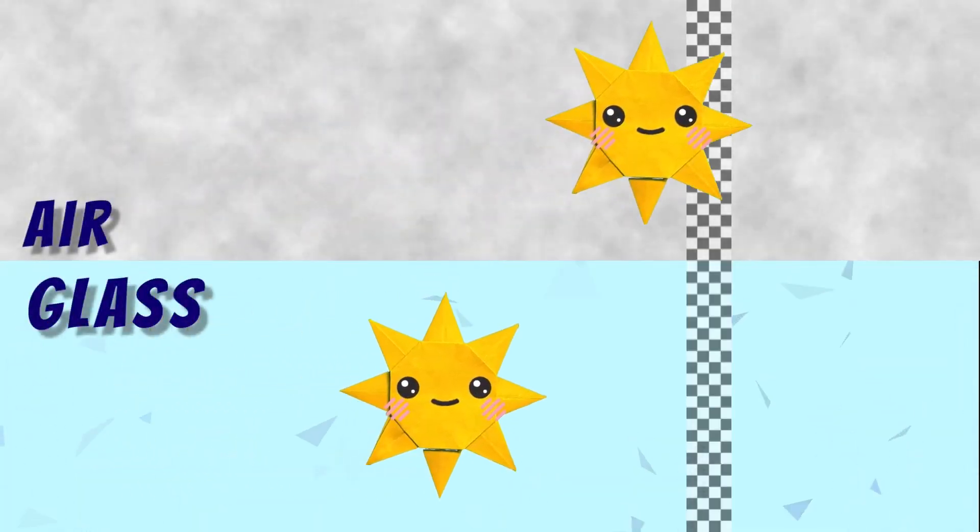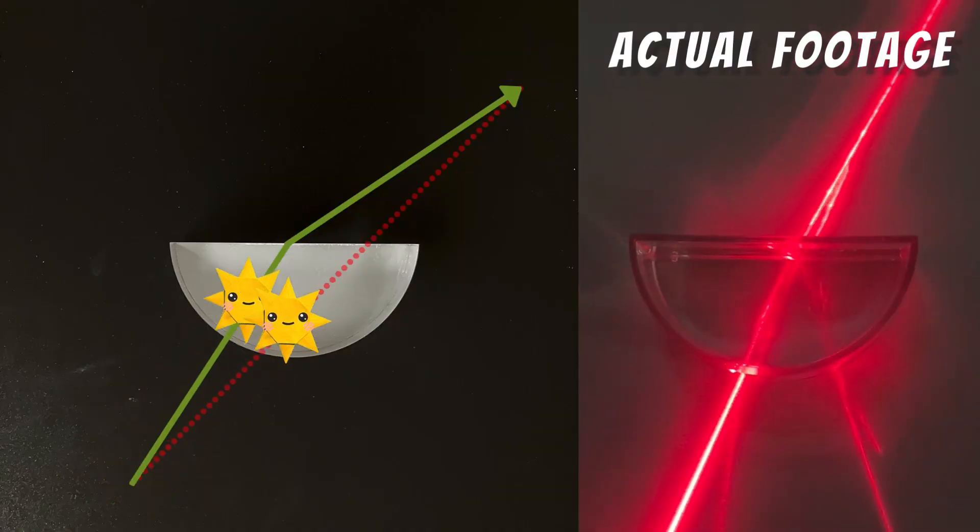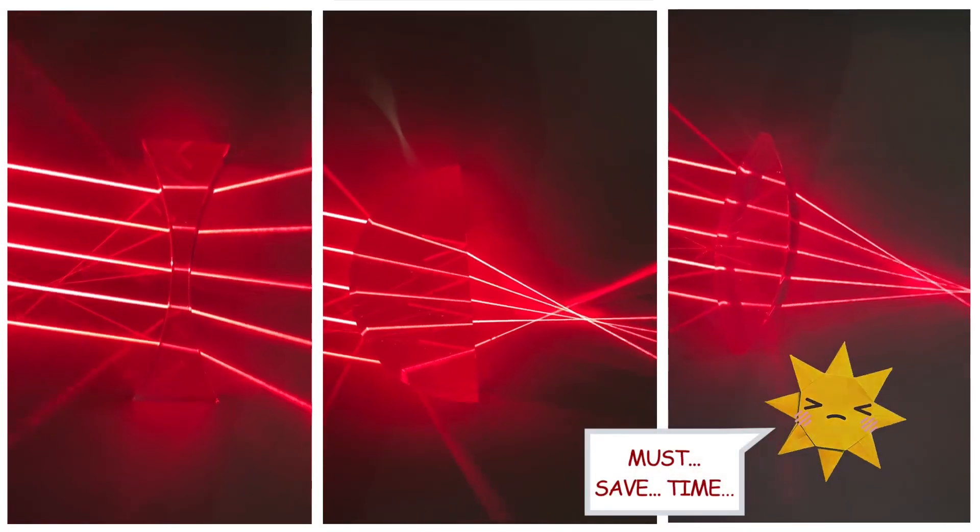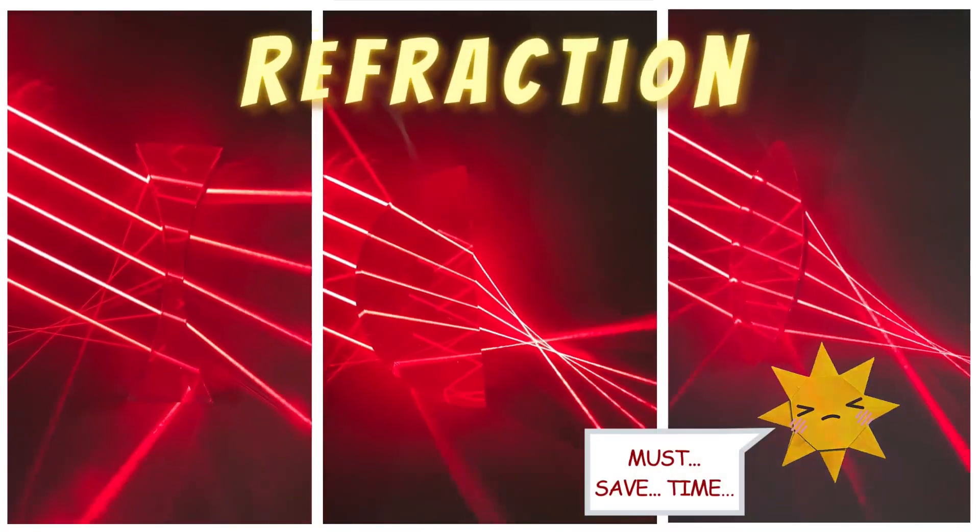Take this piece of glass, for instance. Photons move faster through air than through glass, so they save time by bending to waste less time in glass. This is why light bends between mediums, a phenomenon called refraction.